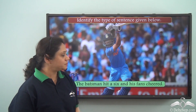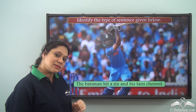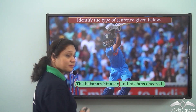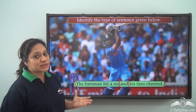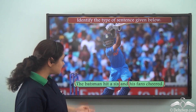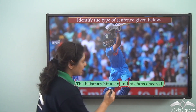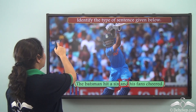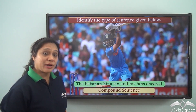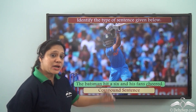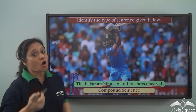Identify the type of sentence: 'The batsman hit a six and his fans cheered.' There are two clauses here — 'the batsman hit a six' and 'his fans cheered' — and both are independent clauses that can stand on their own. They are joined by the coordinating conjunction 'and,' and we have two finite verbs: 'hit' and 'cheered.' So this sentence is a compound sentence.